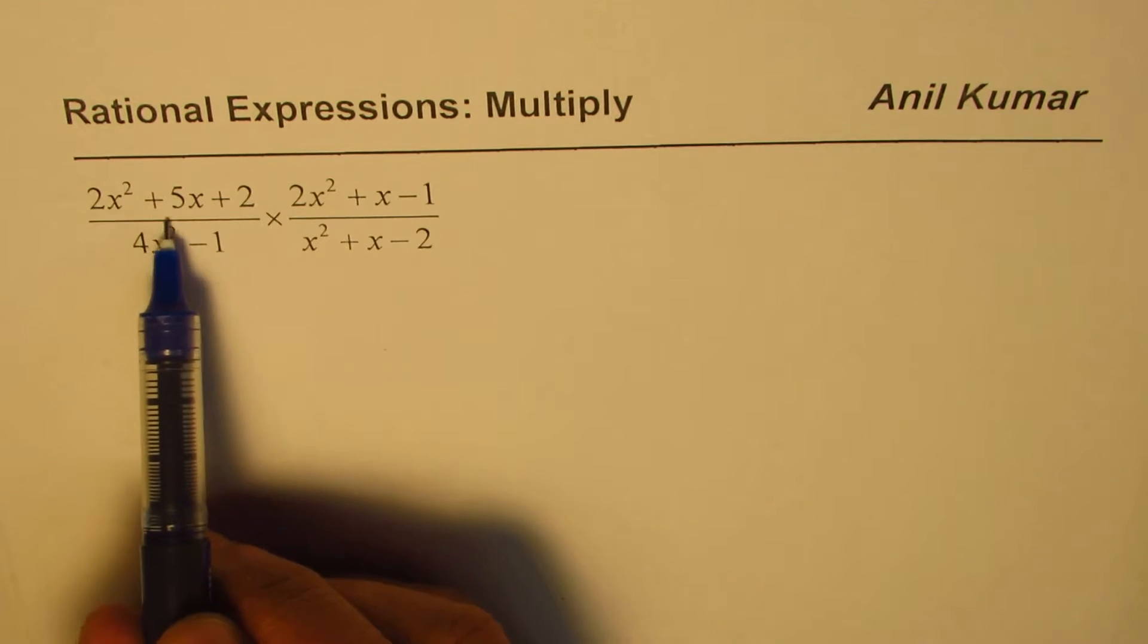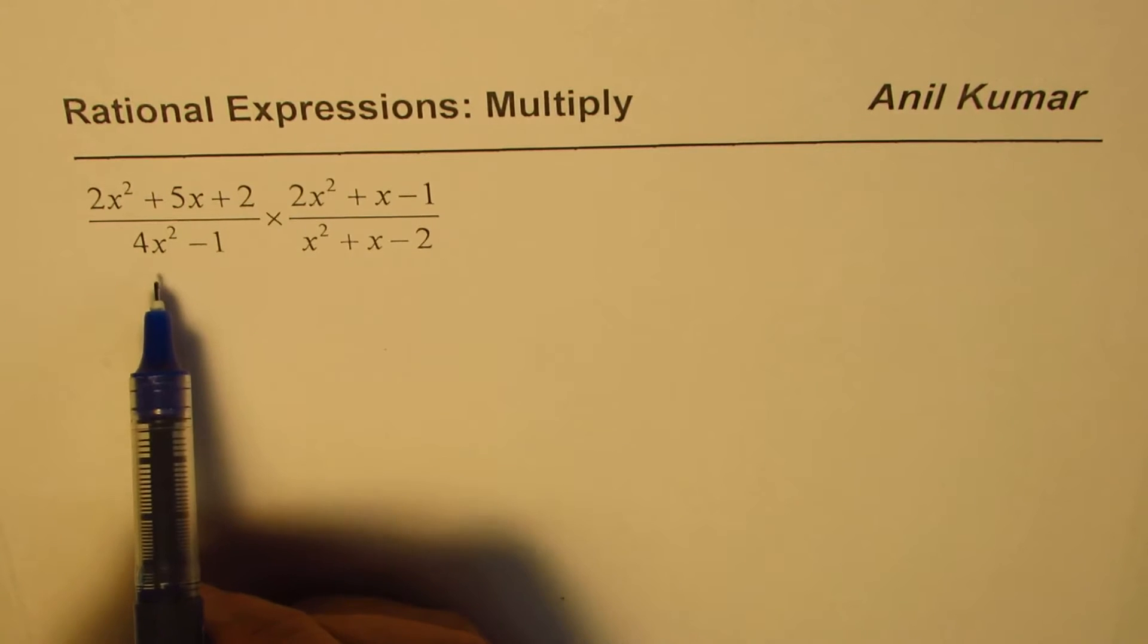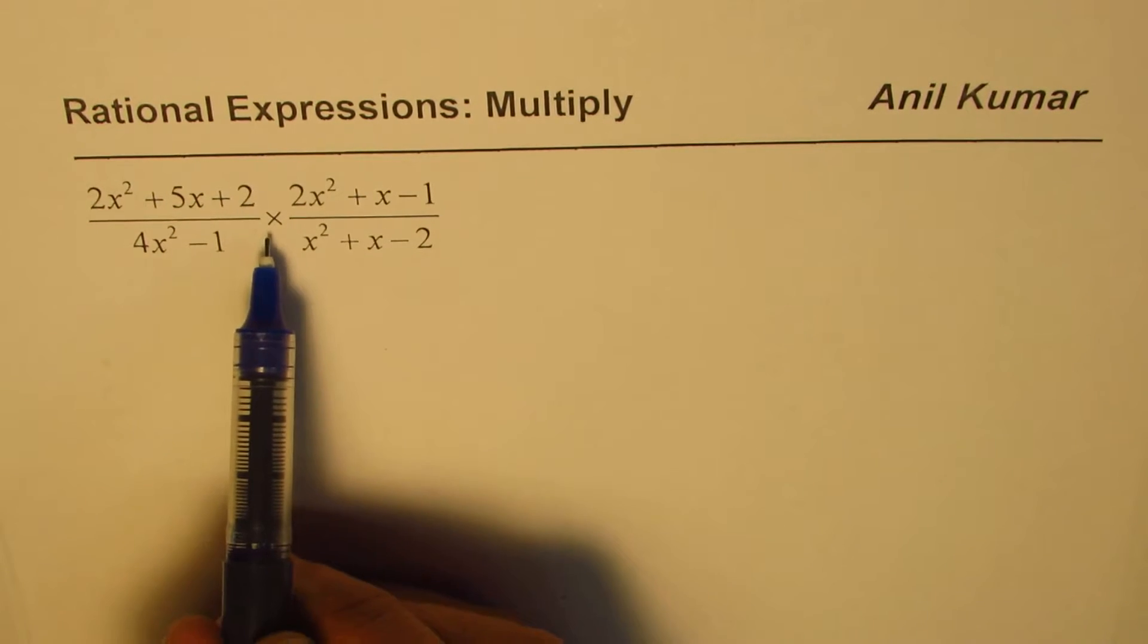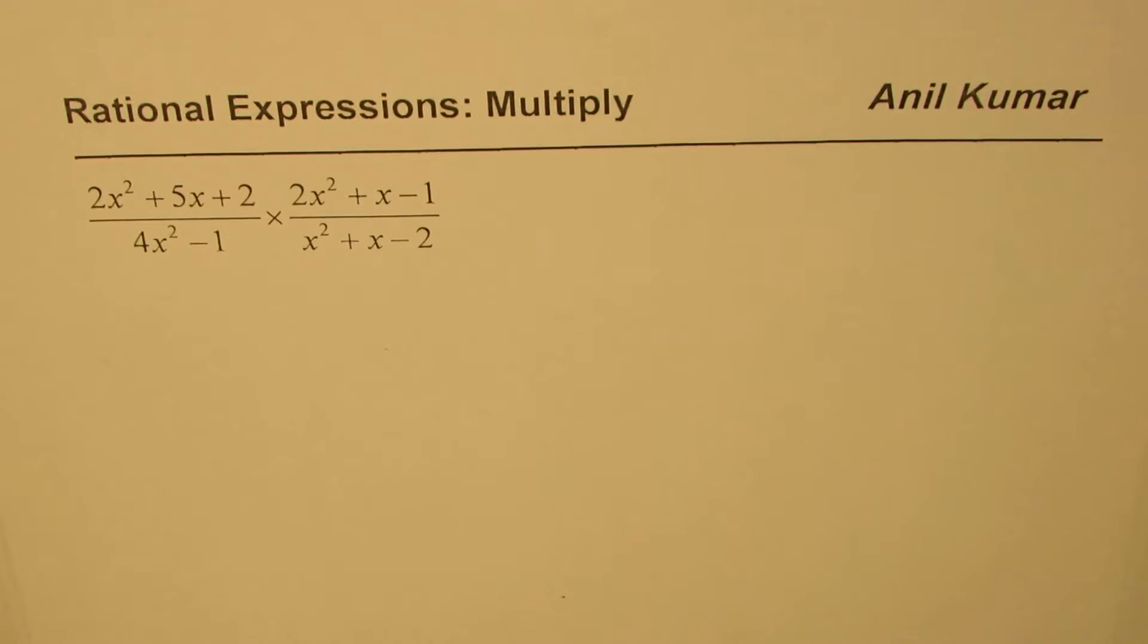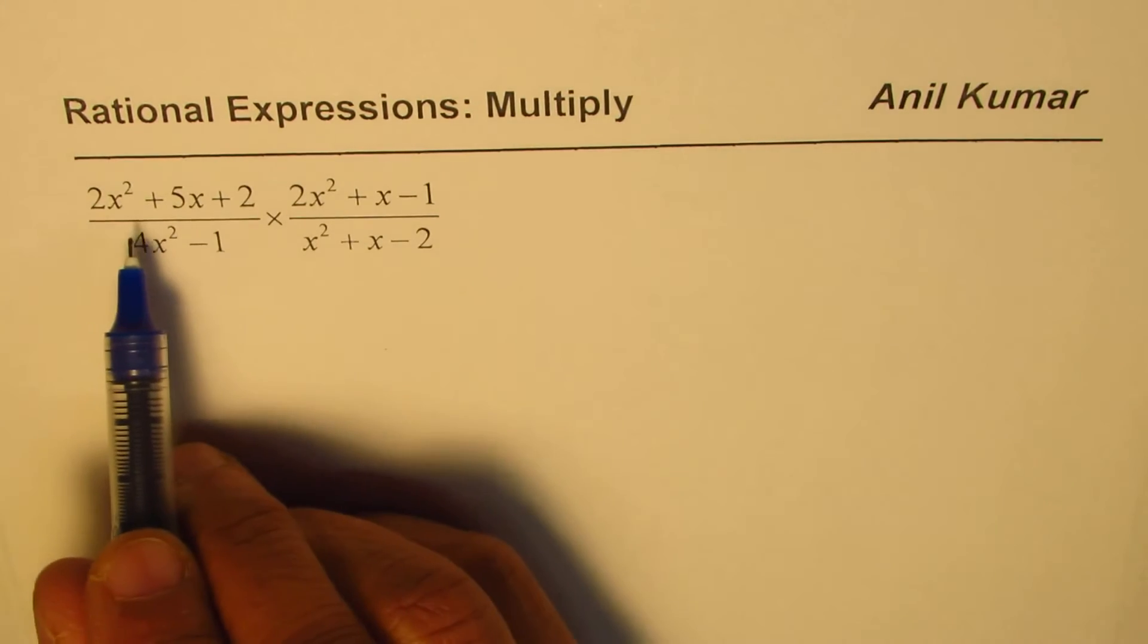We have 2x squared plus 5x plus 2 divided by 4x squared minus 1 times 2x squared plus x minus 1 divided by x squared plus x minus 2. Now, to multiply the rational expressions, we first need to factor. So, let us factor them one by one.